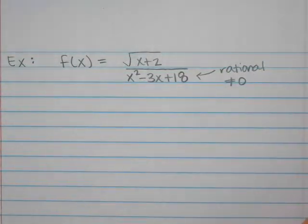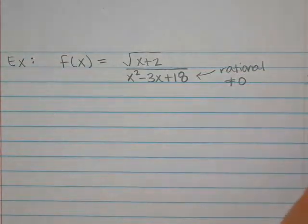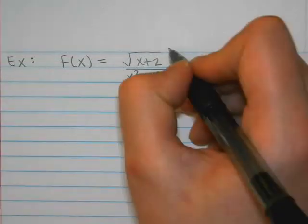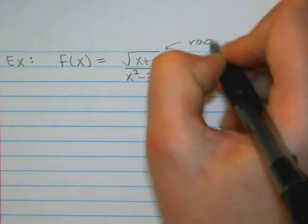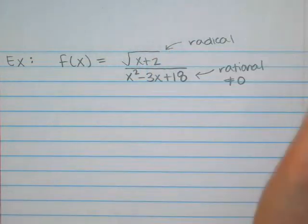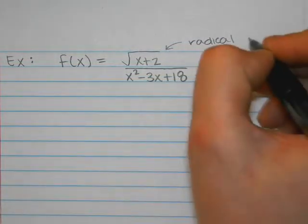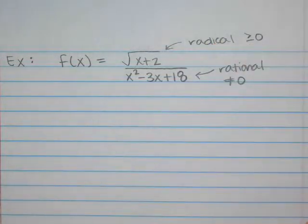And then what else do we have? We have a square root. And the other name for square root is a radical. And what do we know about radicals? It can't be negative. So the stuff underneath the radical has to be greater than or equal to zero.